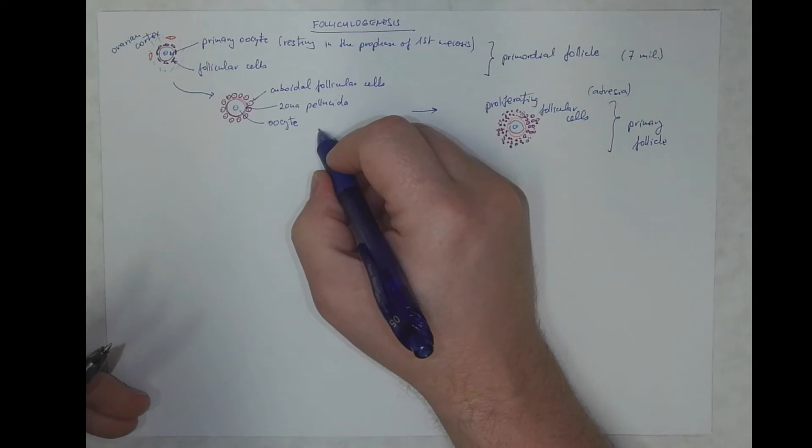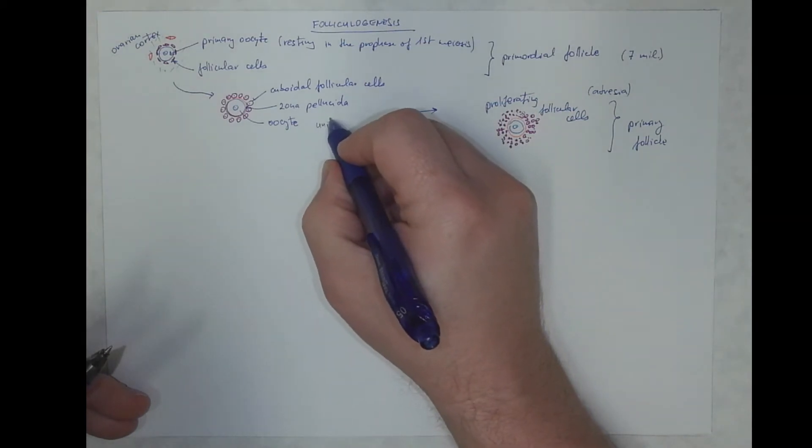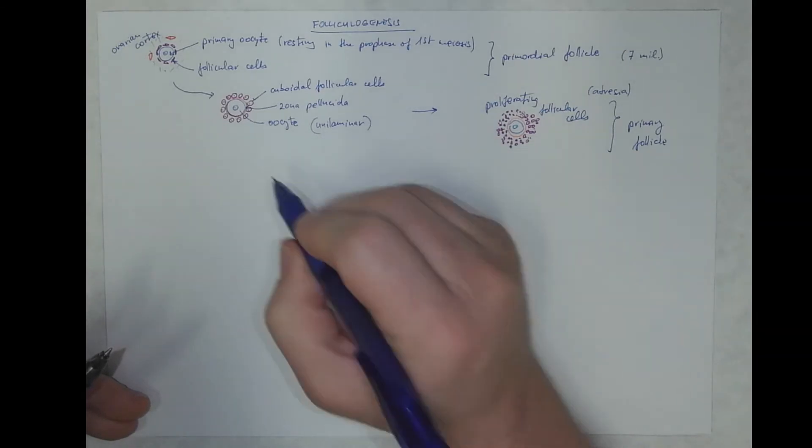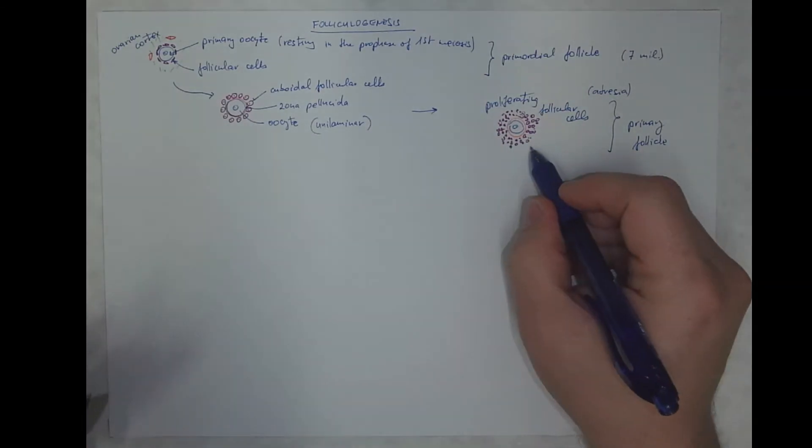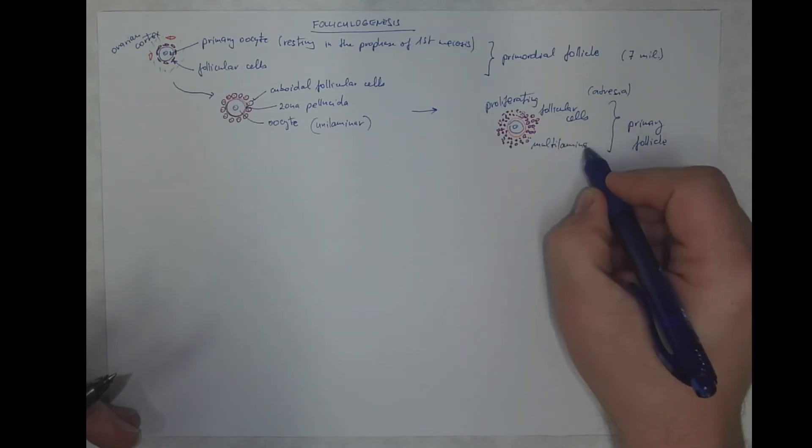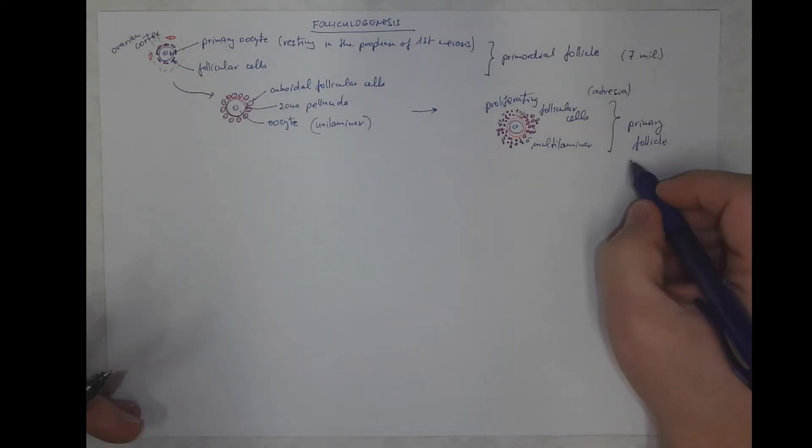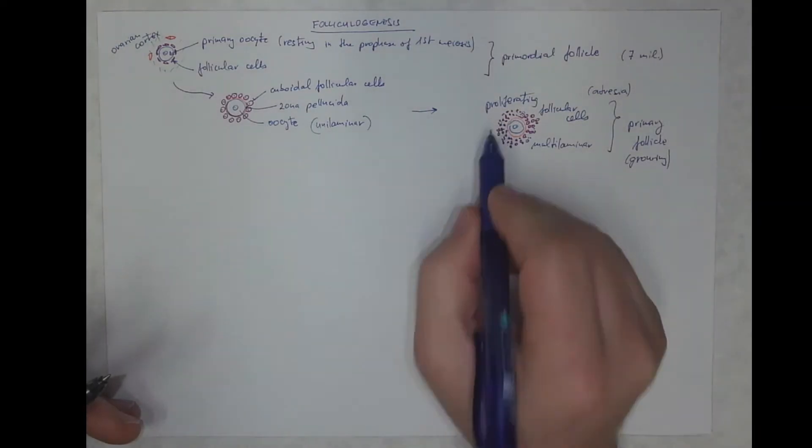However, this is a unilaminar primary follicle and this with more layers is called multi-laminar primary follicle, and it's growing. We can see the growth, we can follow it.